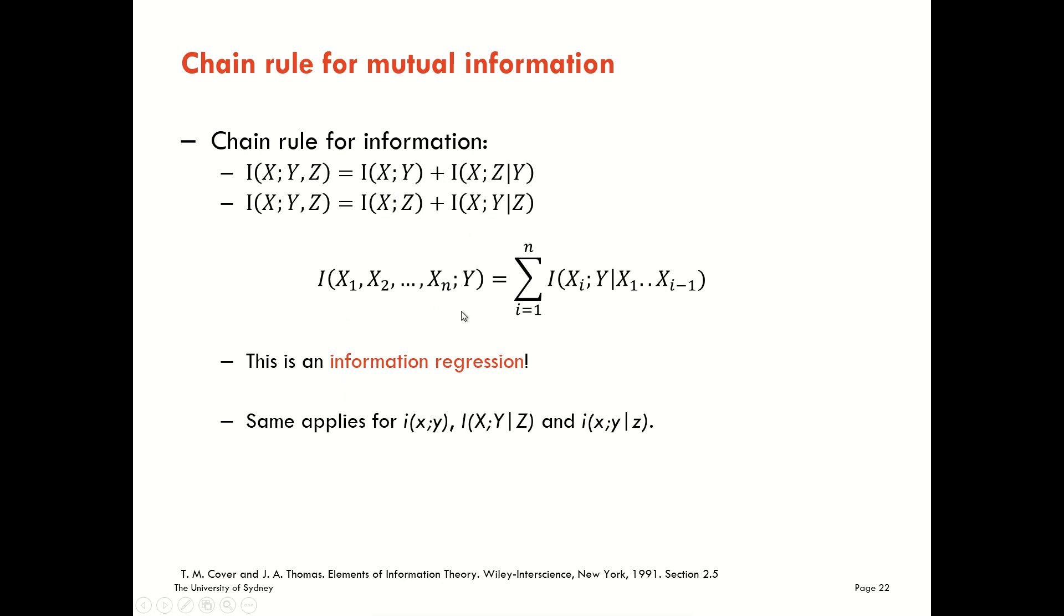This chain rule generalizes to a multivariate set, however many n terms you might want to have. You can do the chaining in the same way by considering your terms in order and conditioning on the source terms that you have already considered. And we can look at this as an information regression, regressing the information that we find in our target across these source variables. We can write the chain rule in a very similar way for pointwise terms as well, of course.